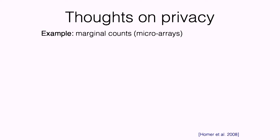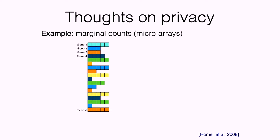Suppose I wanted to release some kind of counts of microarray data. A microarray is where you get a big population of people, measure gene expression levels, and put little marginal counts. So you've got gene one, gene two, gene three — five people had gene one expressed, three had gene two expressed. You might think: if I took everybody's data, added them all together, and released just the total counts across the data set, that should be fine.